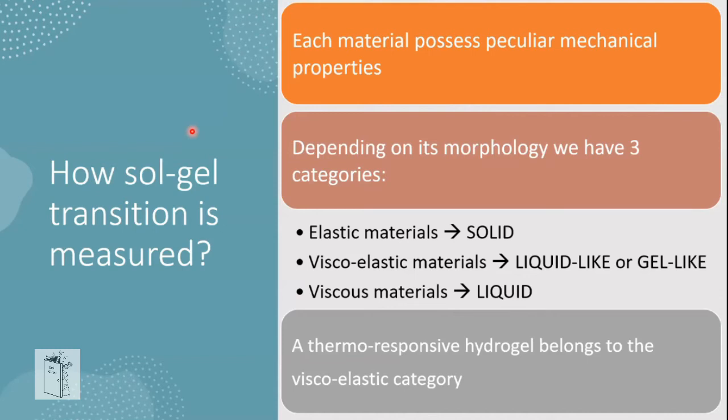Each material possesses peculiar mechanical properties depending on its morphology. There are three categories: elastic materials (pure solids), viscoelastic materials (liquid-like or gel-like), and viscous materials (liquids like water). Since we're talking about a thermoresponsive hydrogel, it belongs to the viscoelastic category. Viscoelastic materials surround us daily — toothpaste, mayonnaise, honey, and maple syrup are all common examples.